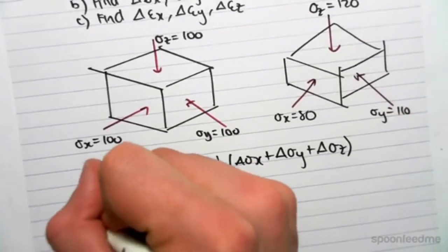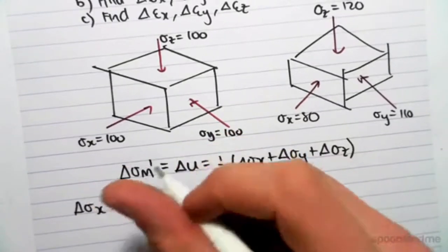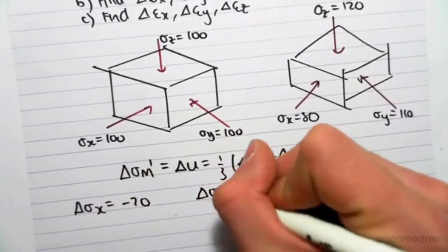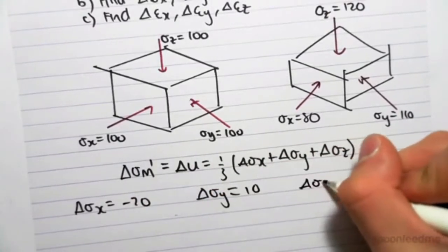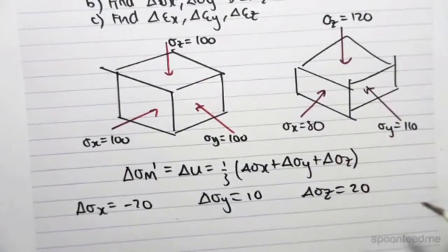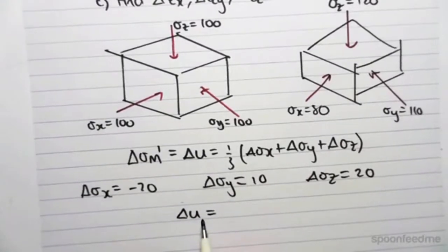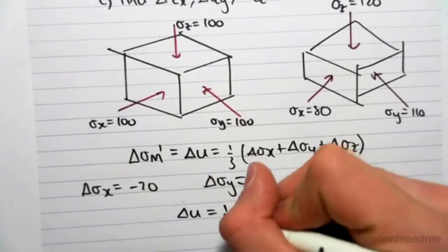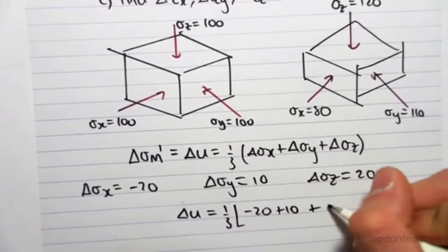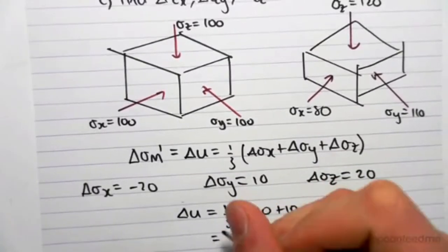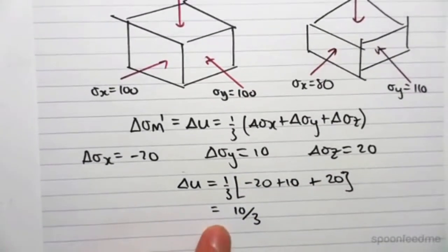We know from before that the change in total stress x went from 100 to 80, so it's minus 20. Change in y went from 100 to 110, so it's plus 10. And change in z went from 100 to 120, so it changed by 20. This means our change in pore water pressure equals one third of (minus 20 plus 10 plus 20), which equals 10/3. So that is our change in pore water pressure.